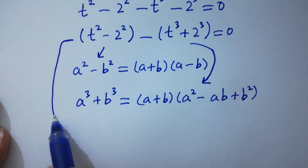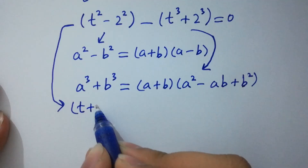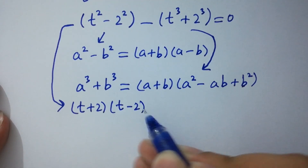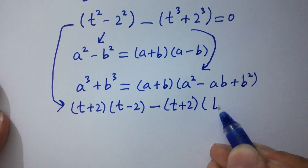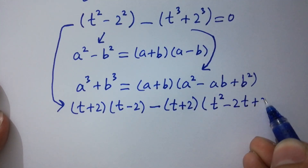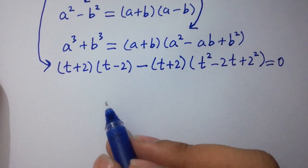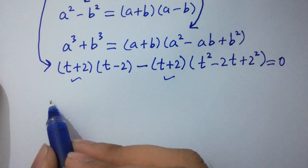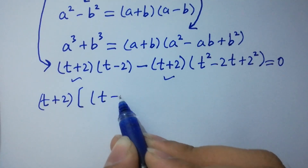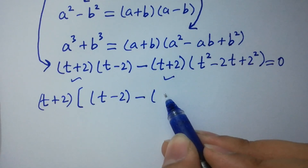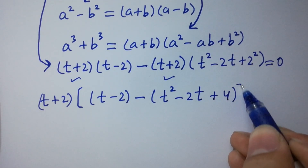So applying both formulas, t squared minus 2 squared gives us t plus 2 times t minus 2, and t cubed plus 2 cubed gives t plus 2 times t squared minus 2t plus 4, all equal to 0. Here t plus 2 can be taken as common, giving t plus 2 times t minus 2 minus bracket t squared minus 2t plus 4 equals 0.